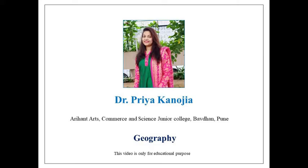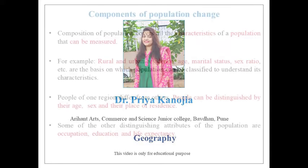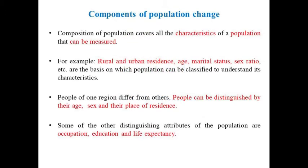Today let us understand various aspects of population change. Composition of population covers all the characteristics of a population that can be measured. The factors of population that can be measured include rural and urban residents, age, marital status, and sex ratio. People can be distinguished by their age, sex, and their place of residence.